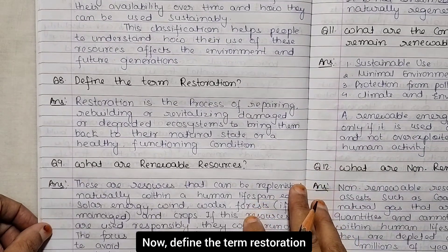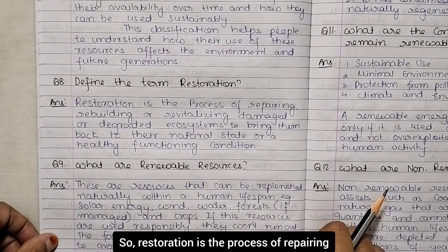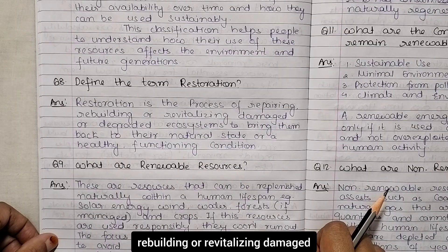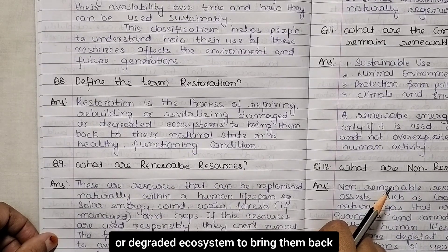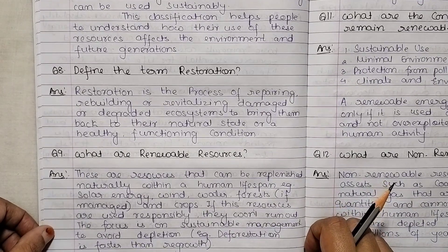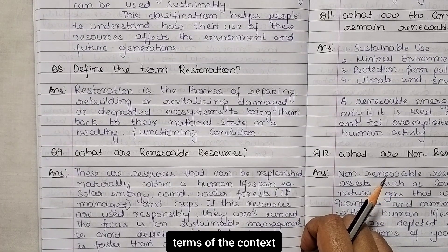Next: define the term restoration. Restoration is the process of repairing, rebuilding or revitalizing damaged or degraded ecosystems to bring them back to their natural state or a healthy functioning condition. This definition is given in the context of the chapter.